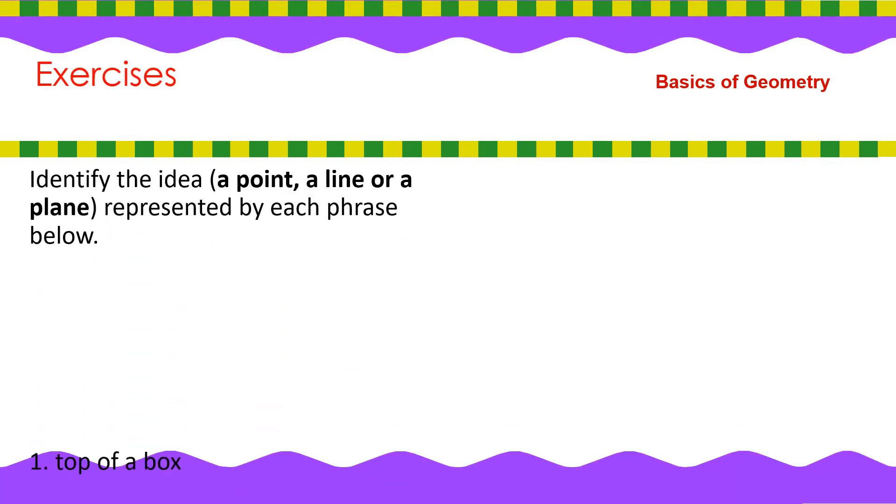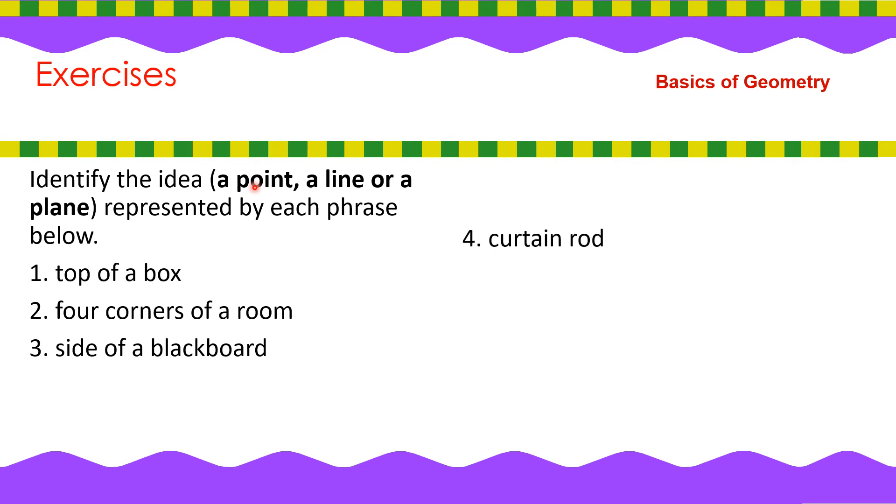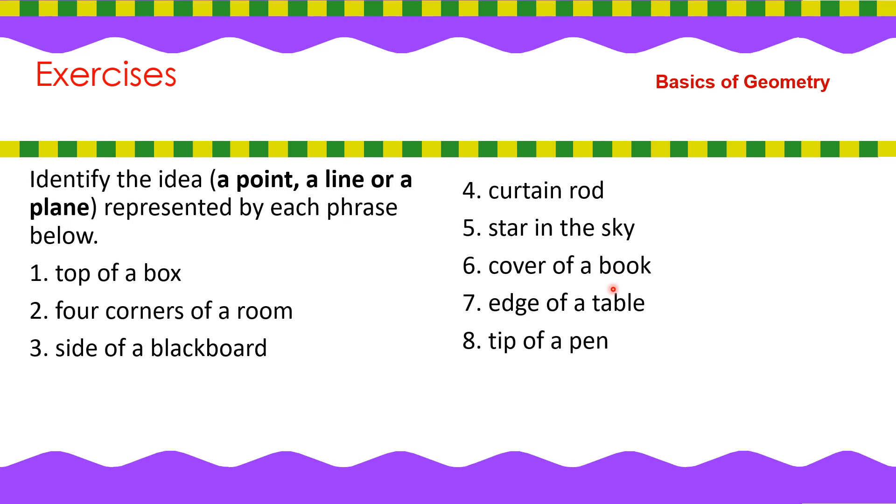Now, let's have some exercises. Identify the idea. The answer may be a point, a line, or a plane represented by each phrase below. Top of a table is an example of a plane. Four corners of the room can be represented by a point. The side of a blackboard is a line. Star in the sky, of course, it's a point. Cover of a book is a plane. Edge of a table, it could be a line. Tip of a pen is a point. A clothesline is a line. And a grain of rice is a point. Alright?